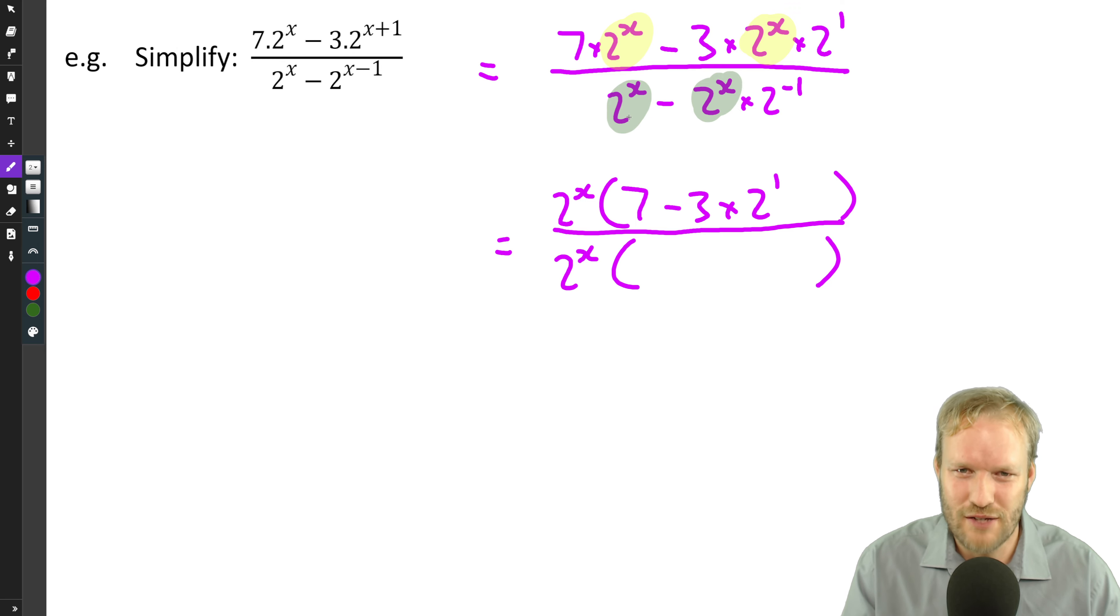Well, two to the x times what will give us two to the x times one? So just be careful. This here is one times two to the x. So sometimes what can be handy is to write that one times as a bit of a safety net. You know, where's the one? Well, there's the one there.